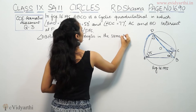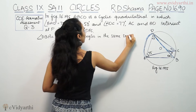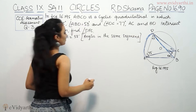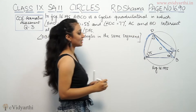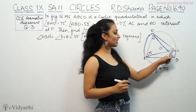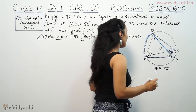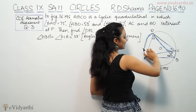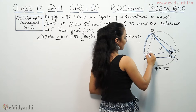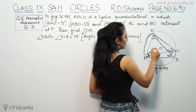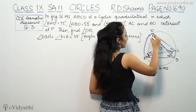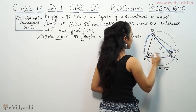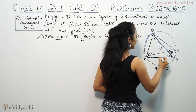These are angles in the same segment. So here you have this angle also as 58 degrees. Now if you have angle DAB as 75 degrees, then we will apply the angle sum property in triangle ABD.